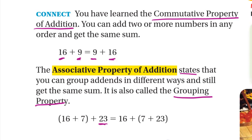It means you add 16 plus 7, then add 23. Or you add 7 plus 23 first — inside the parentheses — then add 16. Both give the same result. If you have three numbers, you can pick any two, add them, then add the third.